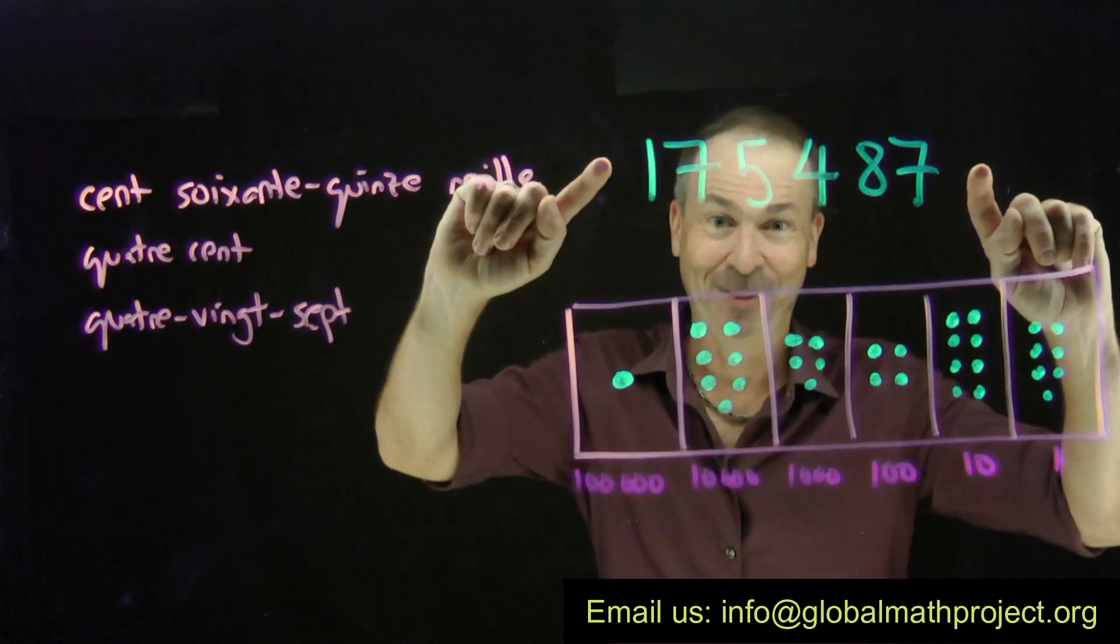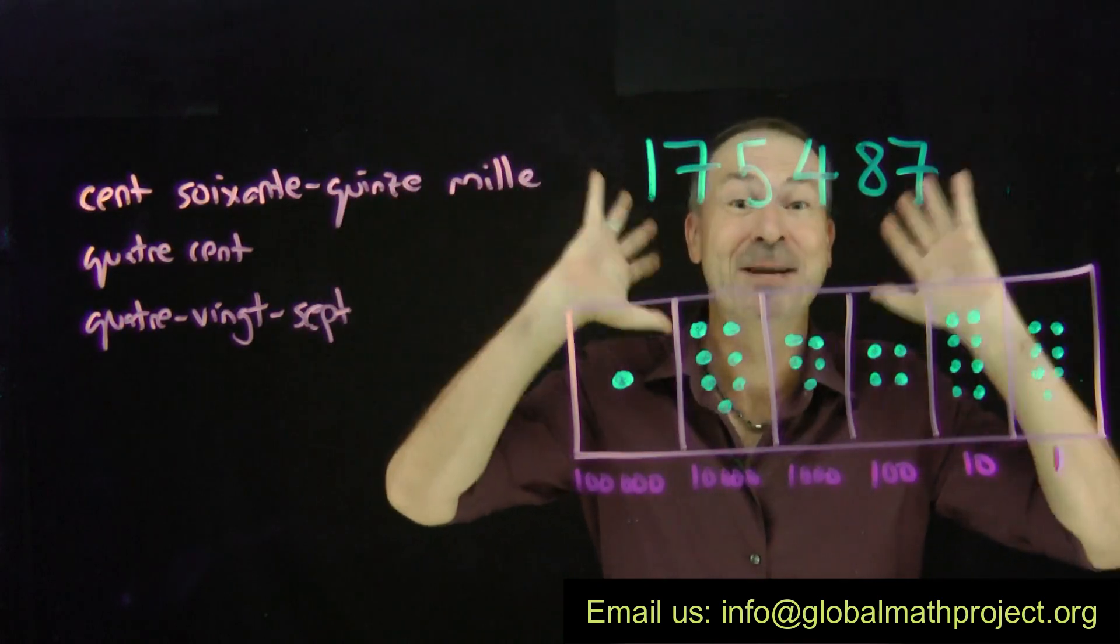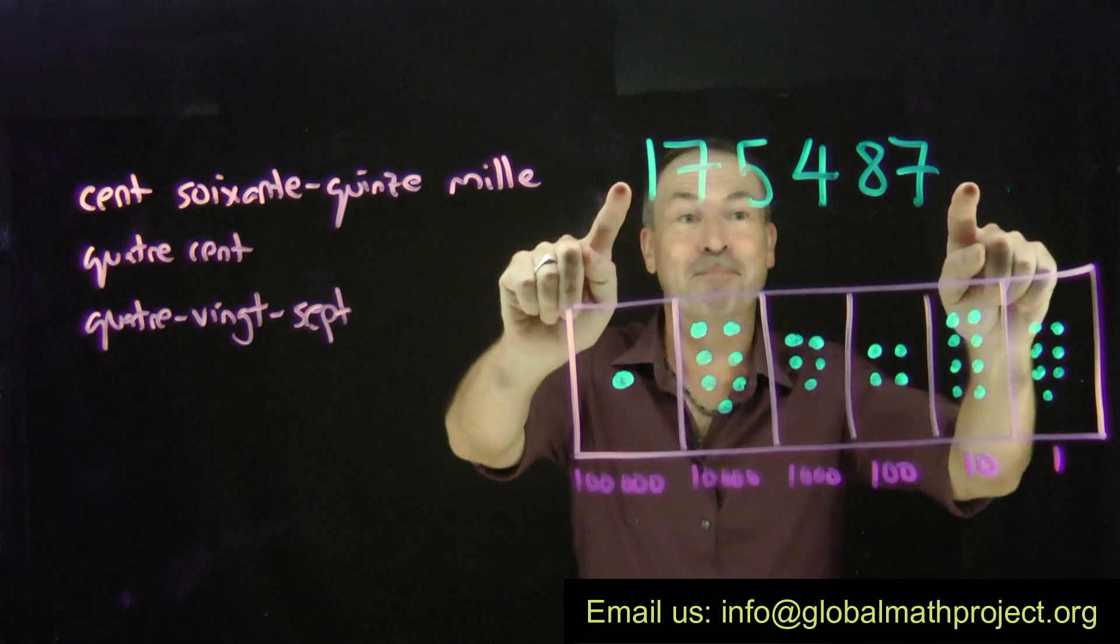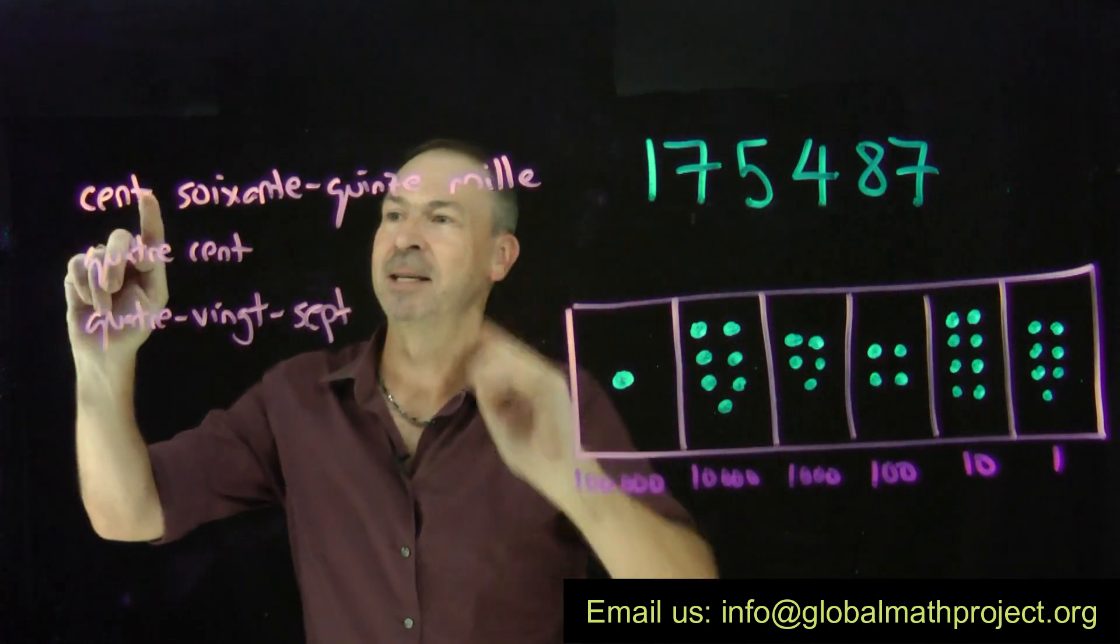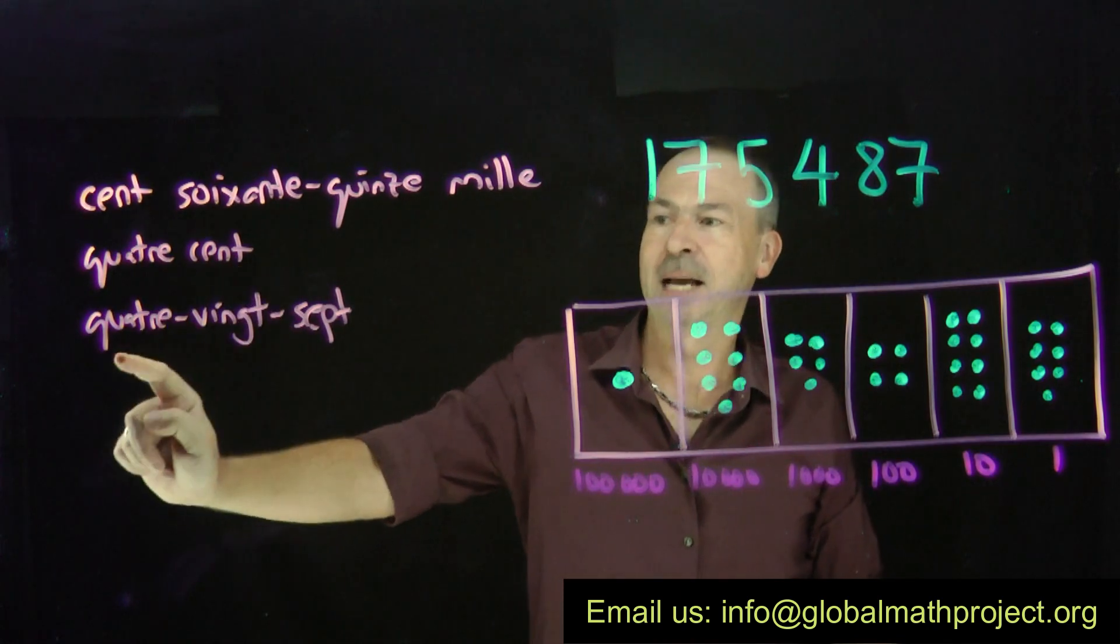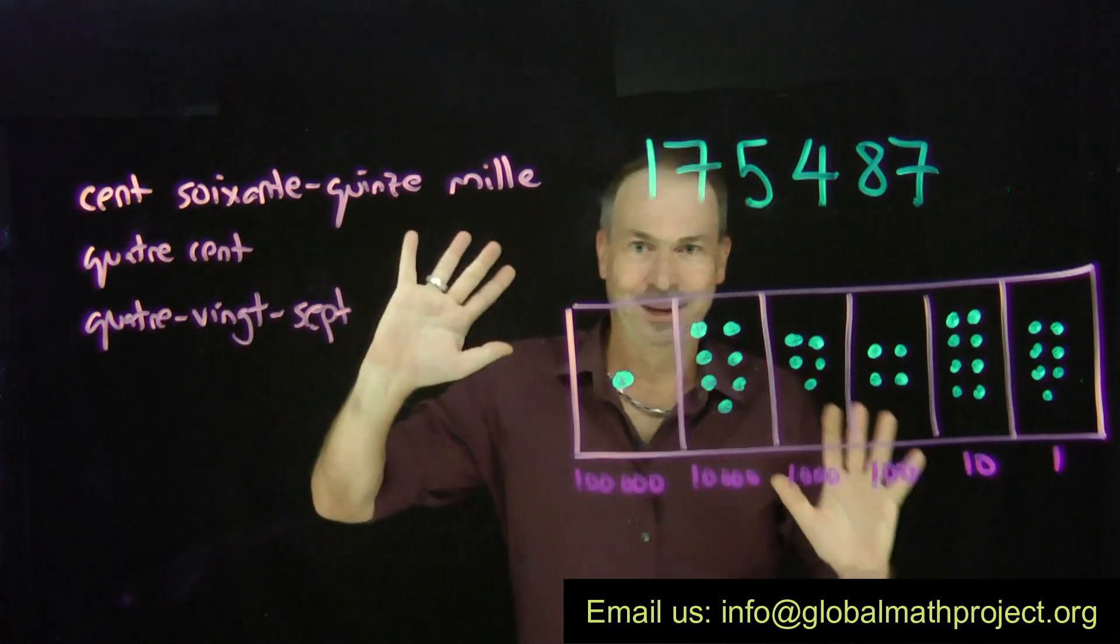For example, let's say this number in French. Now I don't speak French at all. My pronunciation is going to be terrible, terrible, terrible. Please forgive me. But here is this big long number in French. It's cinq, soixante, quinze, mille, quatre cents, quatre-vingt-sept. Okay, something like that.